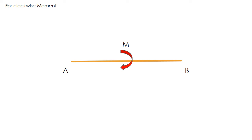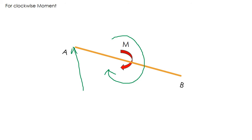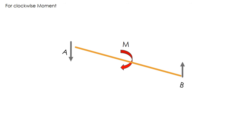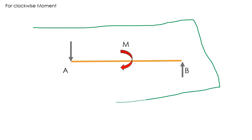For an anti-clockwise moment, the moment is acting in the anti-clockwise direction, and it will deflect the beam up on one side and down on the other. To maintain equilibrium, there will be two forces acting in opposite directions that will turn the beam back to its original position.